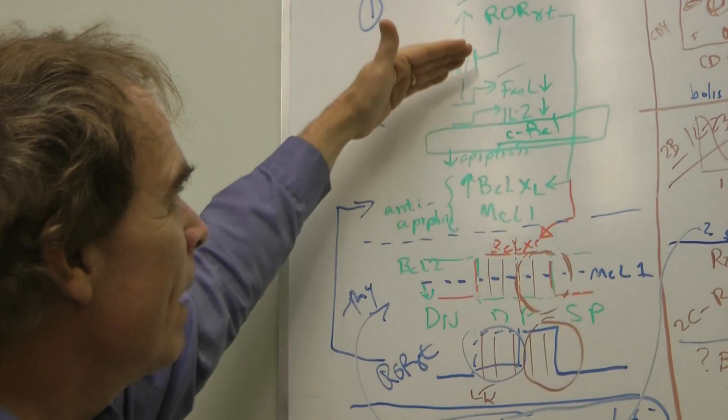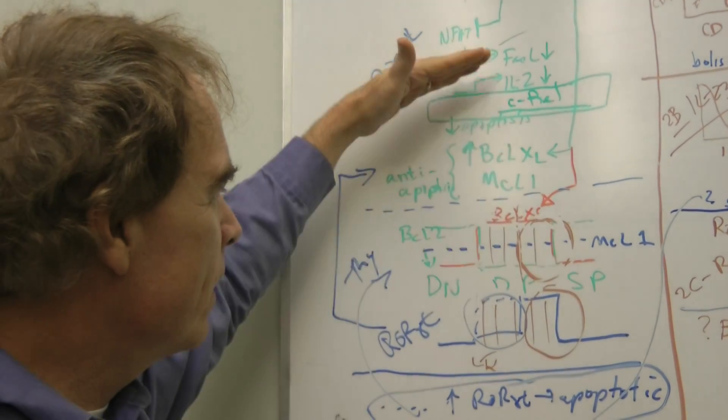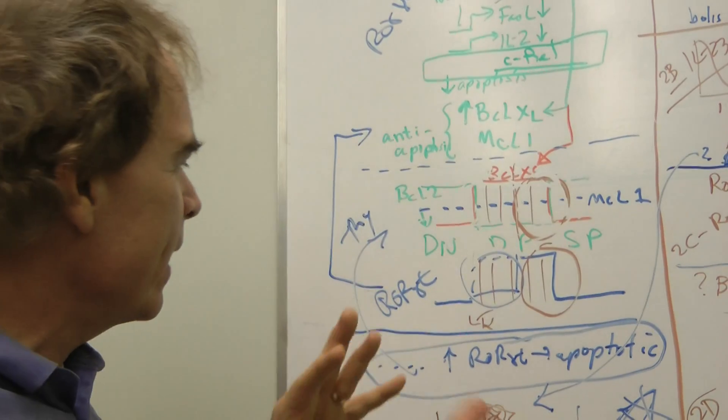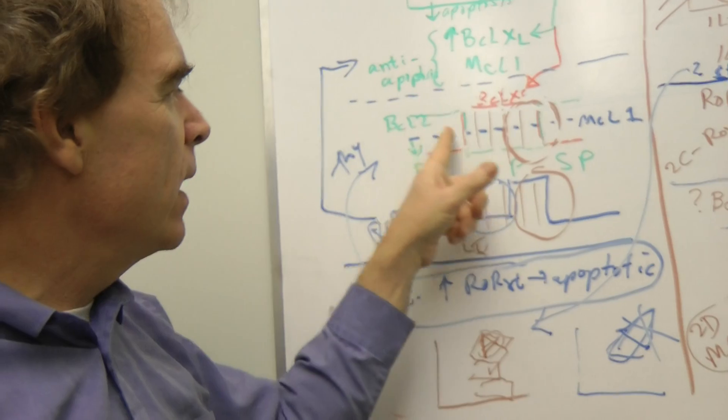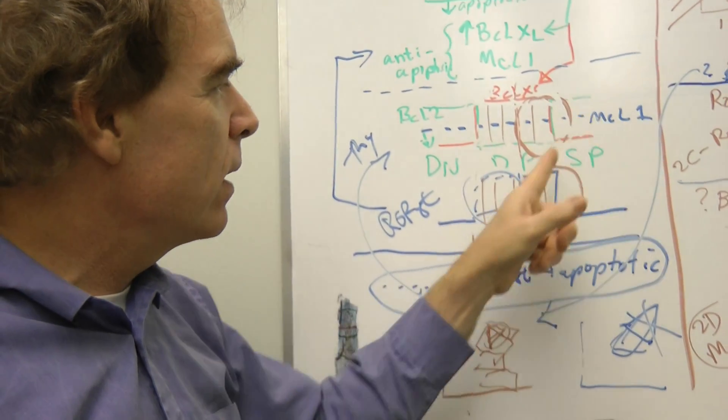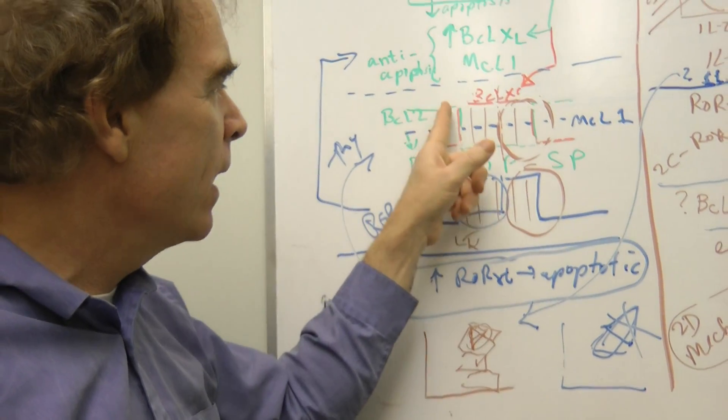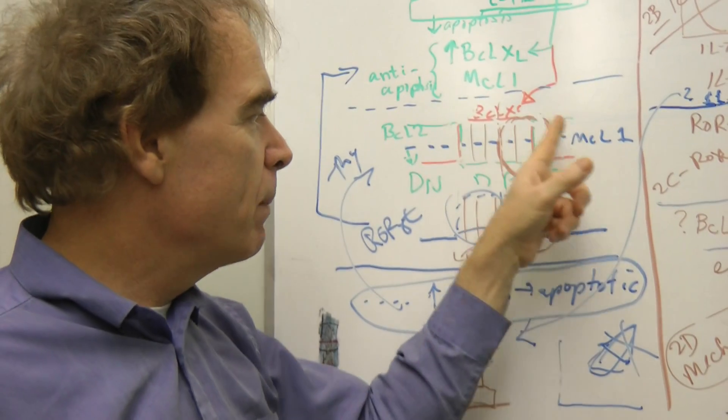So that's the background about ROR gamma T in the thymus. And then the next thing is, what about BCL-2, which is decreased in double positive and increased in single positive? So double negatives high, down low in double positives, back up in single positives.